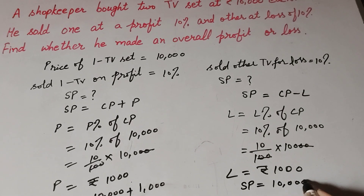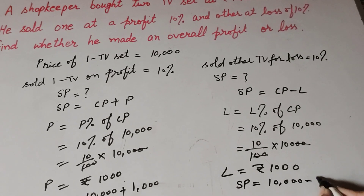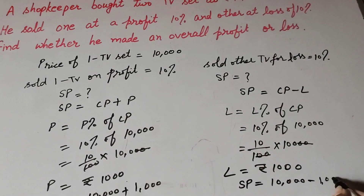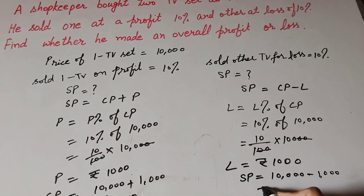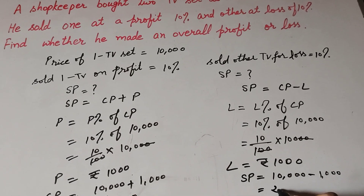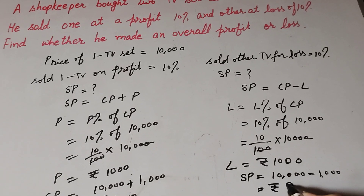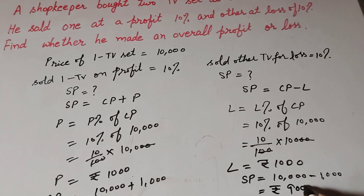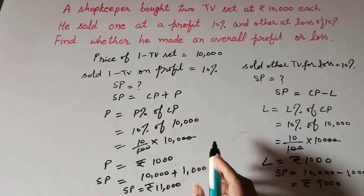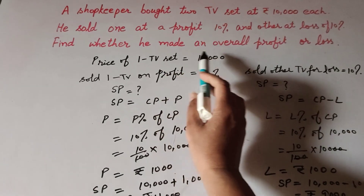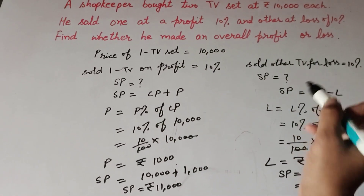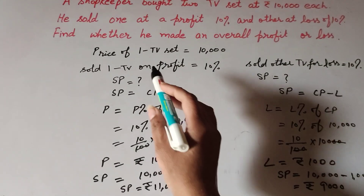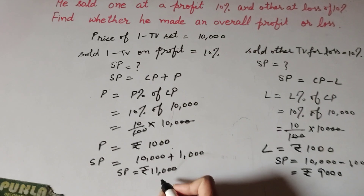So the loss is rupees 1,000. Now we find the selling price of the second TV: selling price equals cost price minus loss, which is 10,000 minus 1,000, equal to rupees 9,000.